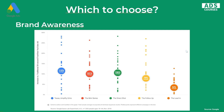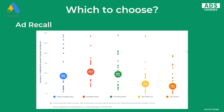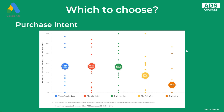Here is data from Google showing which sequence type works best for each goal. For brand awareness, tease-amplify-echo and the direct shot are good, and the mini series is also okay. For ad recall, the mini series stands out. For purchase intent, you've got three strong options: tease-amplify-echo, the mini series, and the direct shot. You should always have a strategy and a plan before you create a sequence campaign — I wouldn't recommend just running your regular videos as a sequence; special videos recorded for sequence campaigns will be more effective.